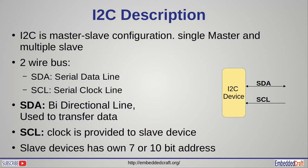I2C is a master and slave configuration — single master and many slaves. I2C has two lines: the SDA line and the SCL line. SDA is the serial data line and SCL is the serial clock line. Data travels on the serial data line, and because data can travel in both directions, SDA is a bi-directional line. The serial clock line provides clock to slave devices, and the clock is driven by the master device.